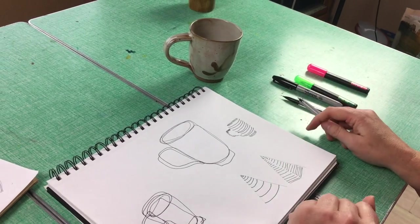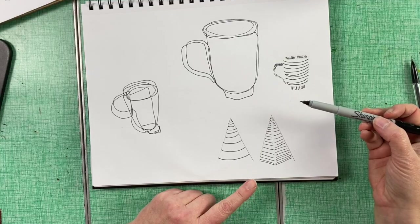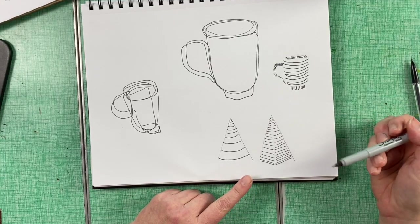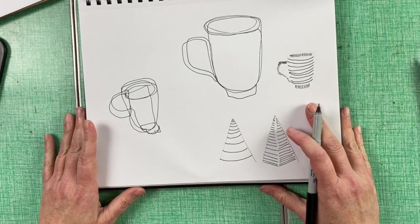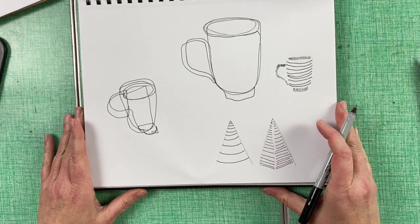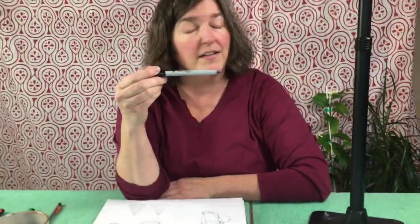But wait, there's more. Line can be used to describe value. And value, we'll talk about more next week. But value talks about the lightness or darkness of the thing. But wait, you're using Sharpie. It's only dark. True, it is. What makes it appear lighter, however, is if we have more white space between the lines.